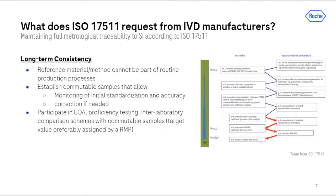IVD manufacturers not only have to establish a calibration hierarchy, they also have to guarantee that their products show high long-term consistency for the chosen reference. Internal monitoring and control mechanisms have to be established by which every new production lot is assessed and released. Additionally, independent external quality assessment schemes help to monitor the consistency, and preferably such schemes are accuracy-based with target values assigned by an acknowledged reference method.